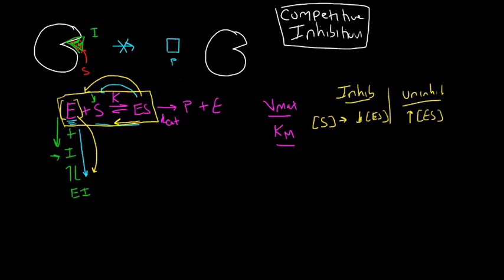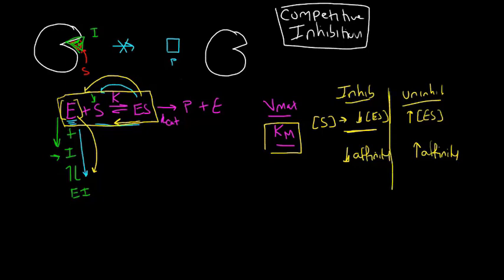This manifests as a lower apparent affinity. In the presence of an inhibitor we have a lower affinity, whereas in an uninhibited reaction we observe a higher affinity. So if we measure a Michaelis constant for a reaction with an inhibitor around, it will reflect lower apparent affinity than without an inhibitor. Remember, a lower affinity means a higher Km — so when the reaction is inhibited, we have a larger Km value.